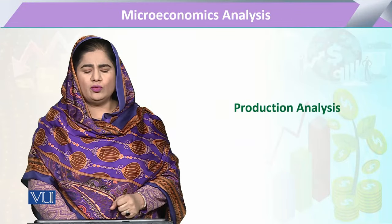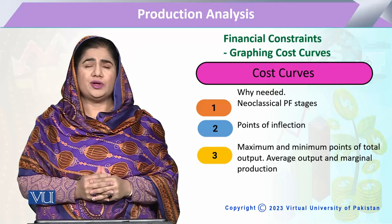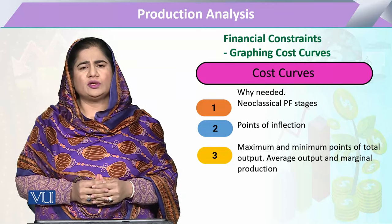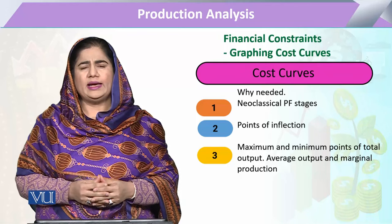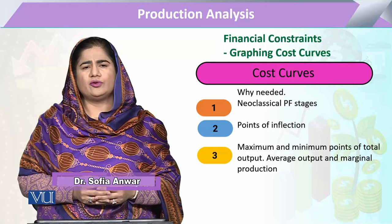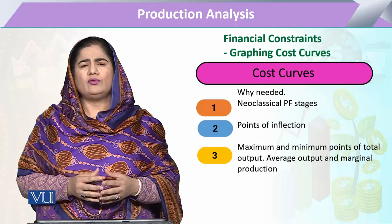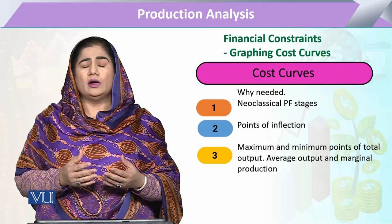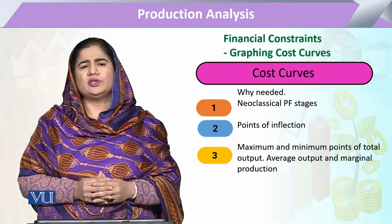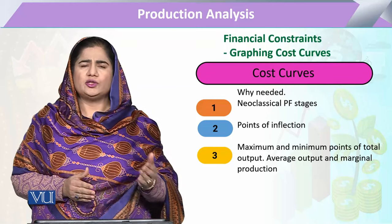In Production Analysis, we are going to study how cost curves are drawn, and the chapter is Financial Constraints. We have already studied on the output side that the production function — particularly the neoclassical production function — has various stages. These stages are very useful in deciding for the entrepreneur up to which level he has to produce, which stage will be useful, and in which stage entering would be a risk or lead to high costs. Reciprocating that production function, when the same level of output is produced, it also entails reciprocating costs.